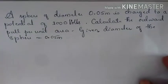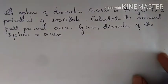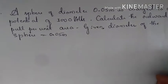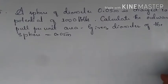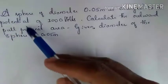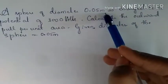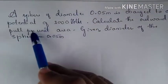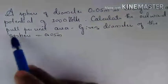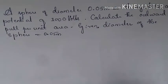In our previous lecture we learnt about problems related to the chapter on dielectrics. Here we continue with the fifth question: a sphere of diameter 0.05 meter is charged to a potential of 1000 volts. We need to calculate the outward pull per unit area given the diameter of this sphere as 0.05 meter.